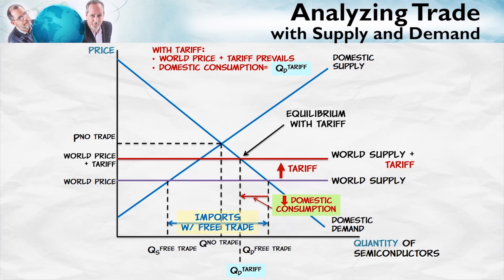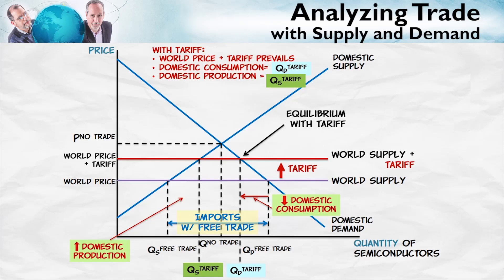Here is the world price. With a higher world price, domestic suppliers are willing to supply more up until this point. So domestic production is going to increase from the quantity supplied with free trade to the quantity supplied with the tariff — it increases from here to here along the domestic supply curve.